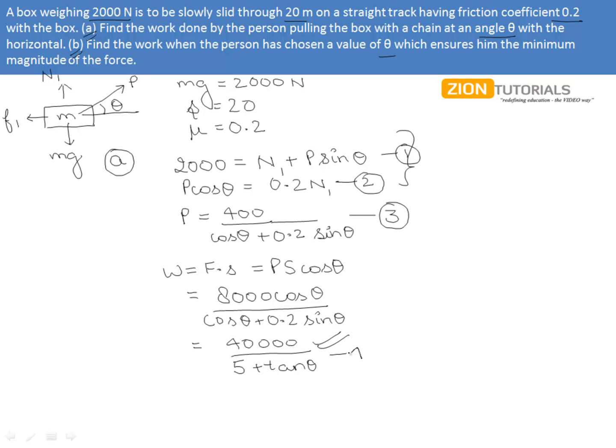Marking it as equation number four which gave us the answer for the first part, let us proceed for the second part of the same question. That is, find the work when the person has chosen a value of θ which ensures him the minimum magnitude of the force.